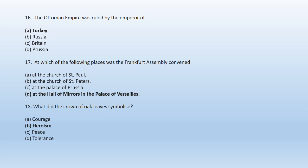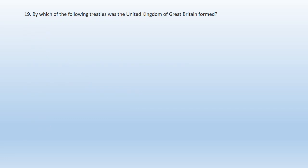Question 18: The right option is B — heroism was symbolized by the crown of oak leaves. Question 19: By which of the following treaties was the United Kingdom of Great Britain formed? A. Treaty of Versailles, B. Act of Union, C. Treaty of Paris, D. Treaty of Vienna. B. Act of Union is the right answer — the United Kingdom of Great Britain was formed by the Act of Union.